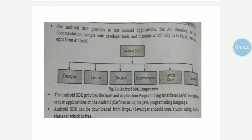The Android SDK can be downloaded from https://developer.android.com/studio. You can find the Android SDK as a zip file. Once downloaded, you need to unzip the file and it will extract into a folder.